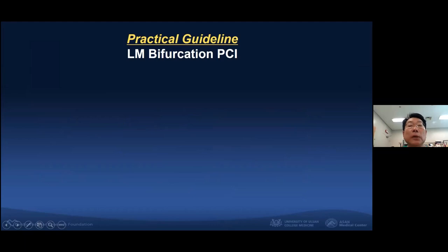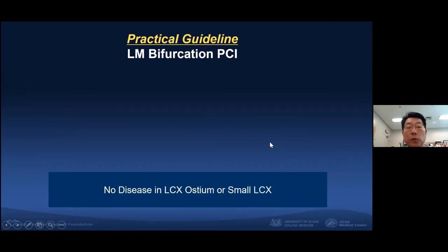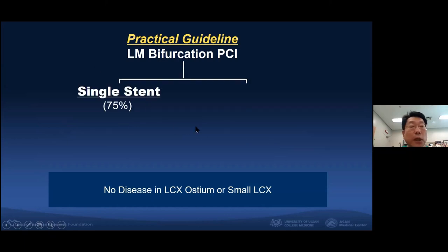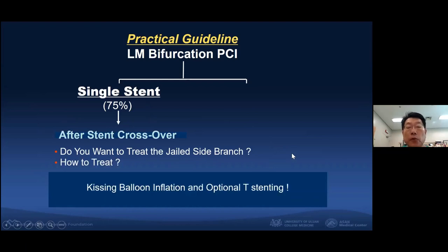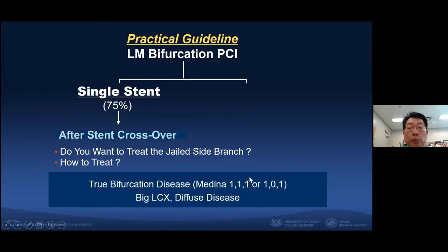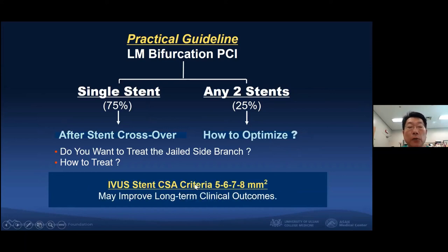To summarize: practical guidelines for main bifurcation PCI — IVUS assessment is recommended for both LAD and circumflex separately. If there is no disease at the circumflex ostium, perform single stent in almost 75% of bifurcation main vessel cases. After stent crossover, if there is a jailed side branch concern, consider FFR first; then treat with kissing balloon inflation and optional T-stent. In true bifurcation — Medina class 1,1,1 or 1,0,1 — perform two-stent in about 25% of cases. To optimize, effective stenting area of 5, 6, 7, 8 mm² by IVUS may improve long-term clinical outcomes.